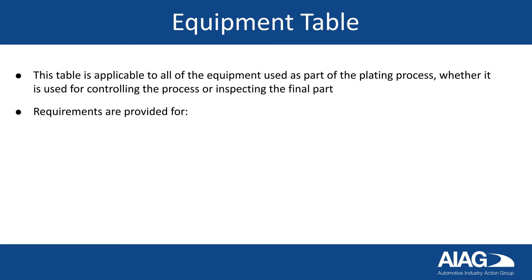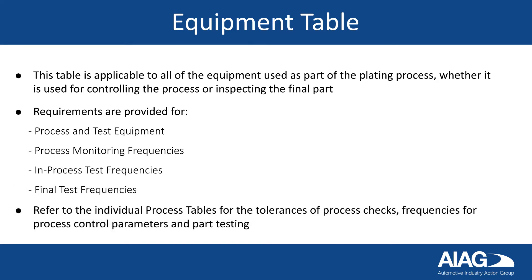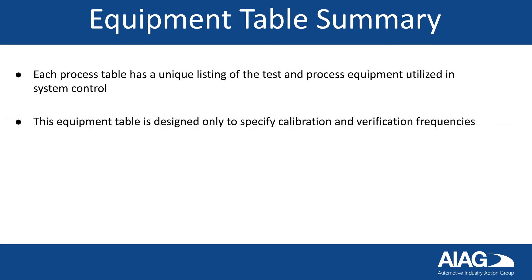Requirements are provided for process and test equipment, process monitoring frequencies, in-process test frequencies, and final test frequencies. Refer to the individual process tables for the tolerances of process checks, frequencies for process control parameters, and part testing. Each process table has a unique listing of the test and process equipment utilized in system control. This equipment table is designed only to specify calibration and verification frequencies.